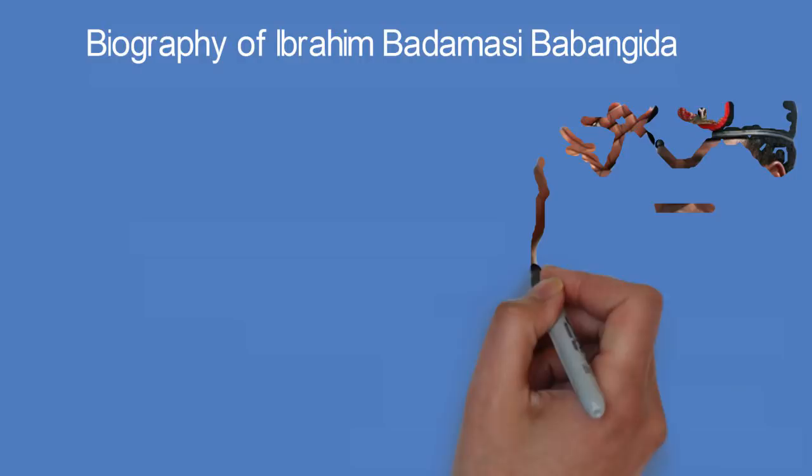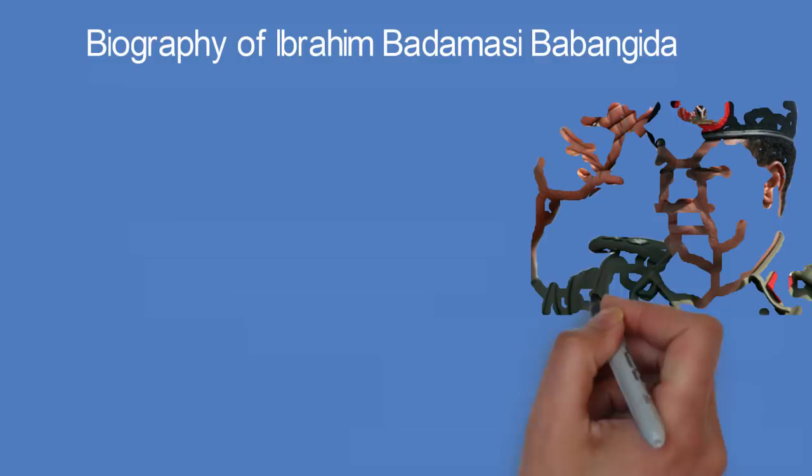Biography of Ibrahim Badamosi Babangida, GCFR. Ibrahim Badamosi Babangida, popularly called IBB, was a Nigerian Army Engineer who was President of Nigeria from 27th of August 1985 to 26th of August 1993.